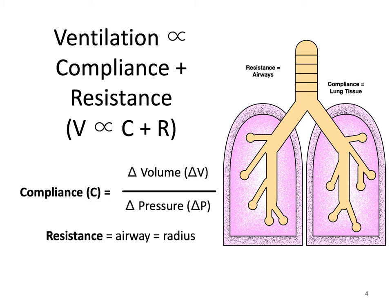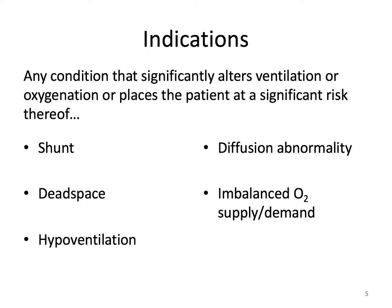Because of the underlying pathology, the lungs are unable to maintain the pressure gradient to allow flow of an adequate volume, and the ventilator will take control of this pressure gradient. Mechanical ventilation is indicated in any condition that significantly alters ventilation or oxygenation, or places the patient at significant risk thereof.